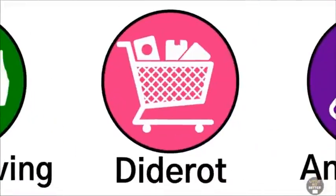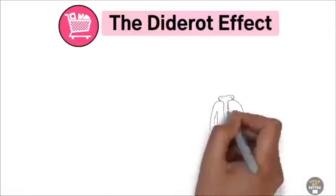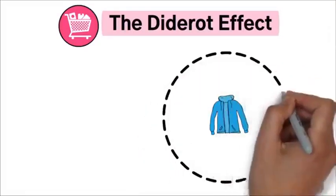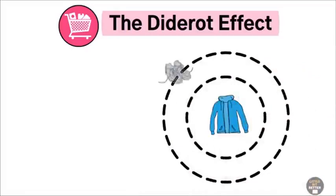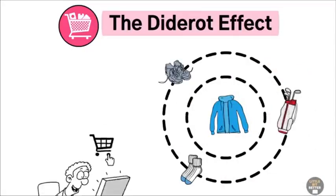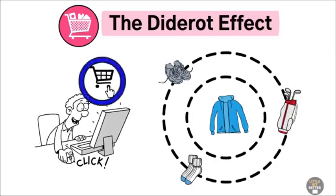The Diderot effect. The Diderot effect is when acquiring a new possession leads to a spiral of additional purchases, such as buying a new outfit and then feeling the need to upgrade other items to match. To avoid this, be mindful of how one purchase can influence your overall spending.